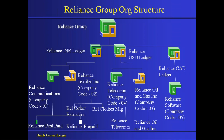Intracompany transactions are transactions between company codes within a single legal entity. For example, if company code 07 is assigned under Reliance Telecom, a transaction between 04 and 07 is an intracompany transaction. From a GL perspective, there is also a definition: a transaction between company codes assigned at the ledger level is also called an intracompany transaction.